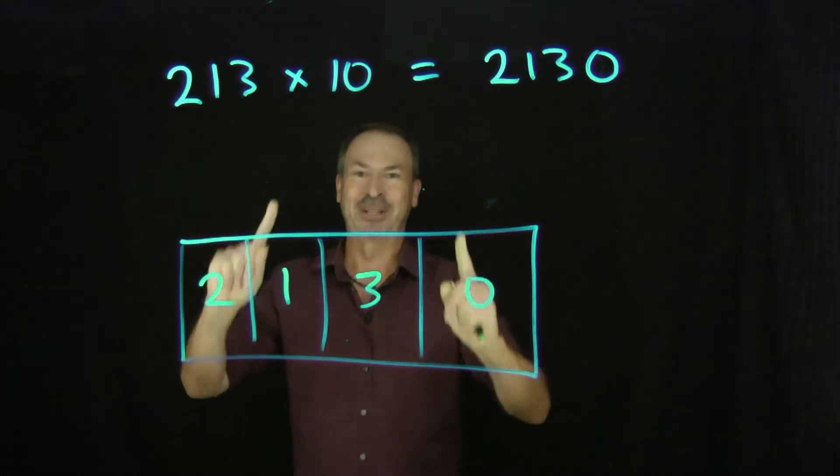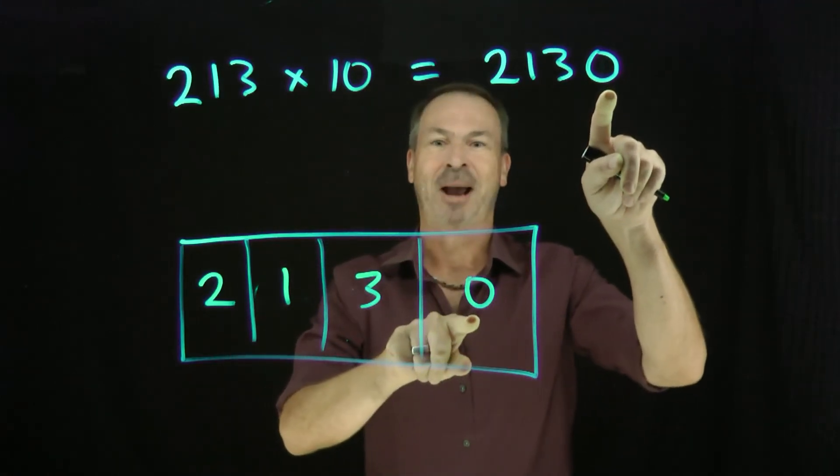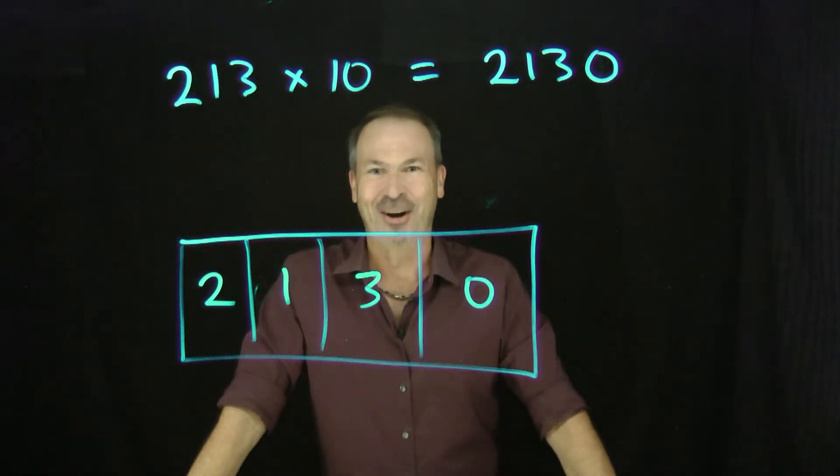Alright, now I get what's going on. Yes, yes, yes. All the digits kind of shifted over in one place to reveal a zero at the end when I multiply by 10. Okay, I've got it now.